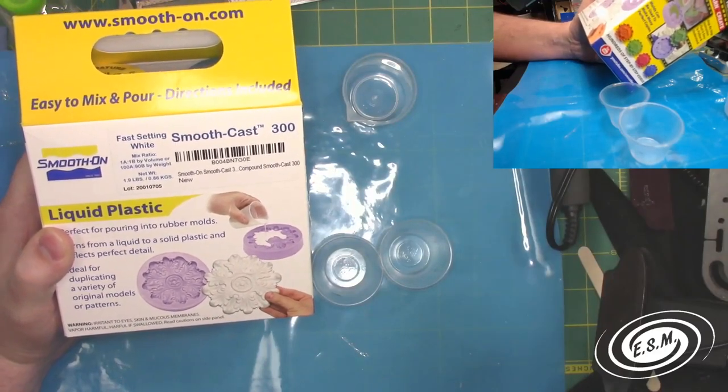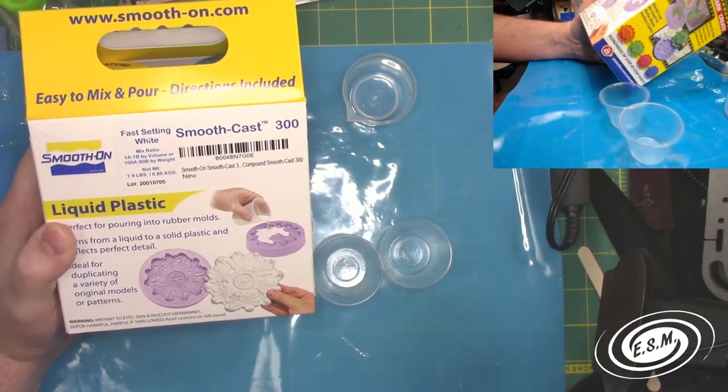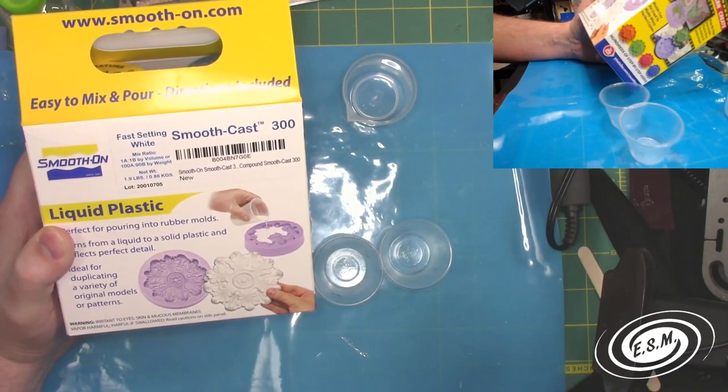Welcome to Engineering Scale Models. Today we're going to be pouring some two-part resin. This is SmoothCast 300.